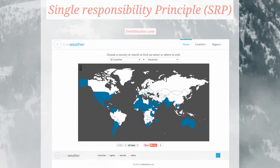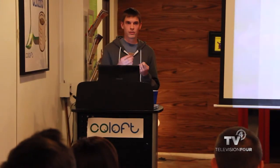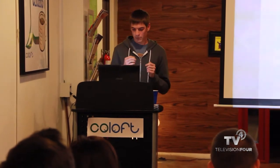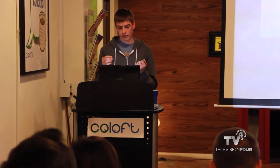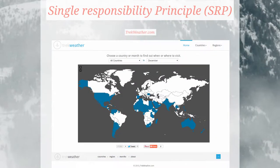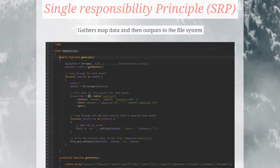The examples I'll go through for SOLID all relate back to a site I developed back in January, before Laravel 4 was released, called trekweather.com. This site allows you to see what the best time is to visit whatever country you're looking to visit. Say you're trying to visit South America — you could click South America and the countries shown in blue are the ones you'd want to visit in, say, December, January, or February, whenever you're planning. The trekweather site uses JavaScript to display a map, and those JavaScript files are generated on the back end. This map generator class is in charge of doing that.